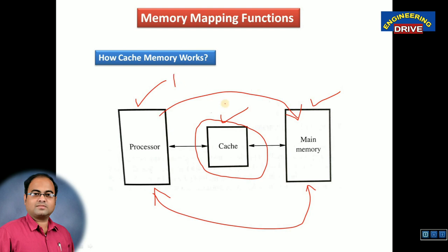Main memory size is comparatively larger than both processor and cache memory, so you can store a large amount of data in main memory. Now, whenever the processor requests data, instead of searching directly in main memory, the processor will search the data in cache memory first. If the data is found in cache memory, it is returned directly to the processor — there is no need to check main memory. The big advantage is that data transfer will take place very fast and your program will execute very fast.